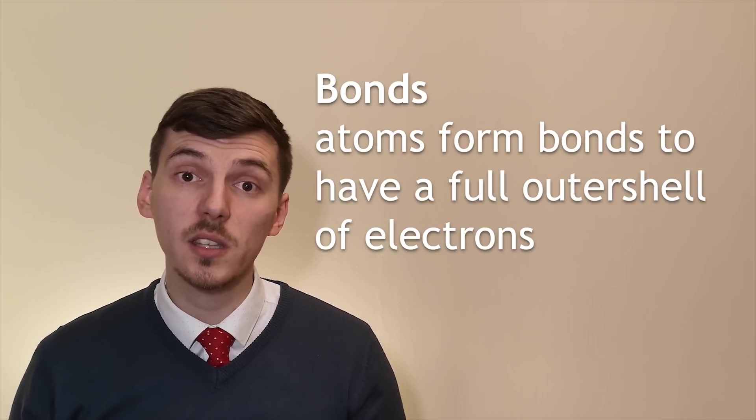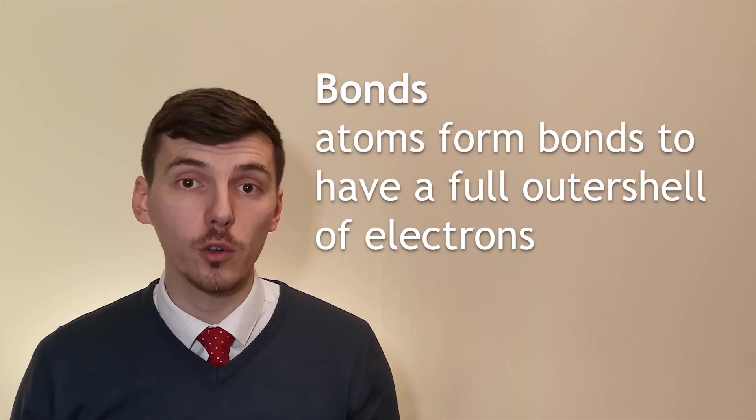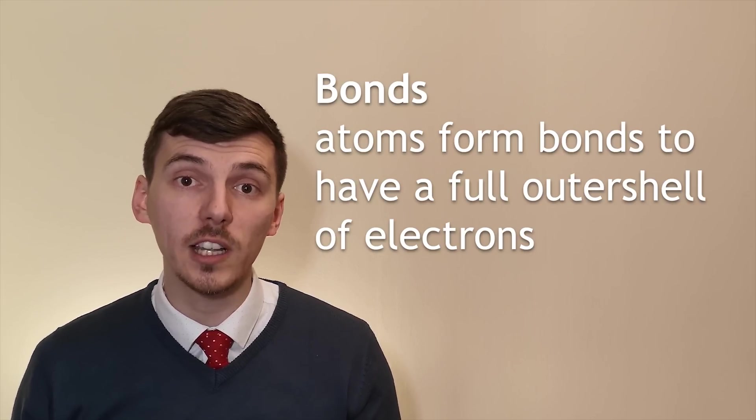Group zero elements are chemically inert because they've already got the full outer shell of electrons. In our next video we're going to talk about bonding and atoms form bonds because they want a full outer shell of electrons. So there's no need for our group zero elements to react if they've already got that.